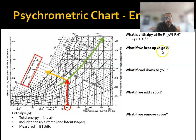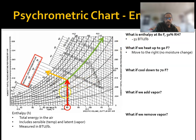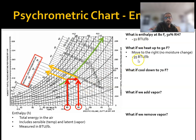What if we heat up this same air mass to 90 degrees Fahrenheit? When you heat air up and you don't change the humidity levels — you don't add or pull out any humidity — you just go straight to the left or the right. We're warming it up, so we're going to move over to the right, find 90 degrees, and then follow our line up. We started at 31 BTUs per pound, heated the air up, added 4 BTUs per pound, so now we're at 35 BTUs per pound.